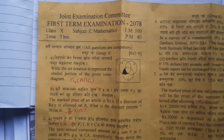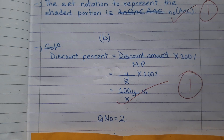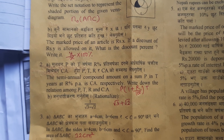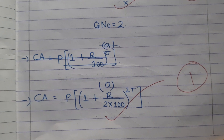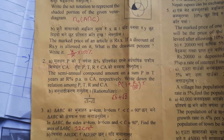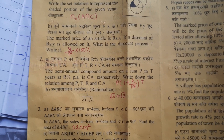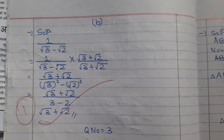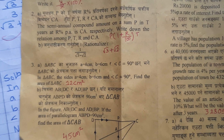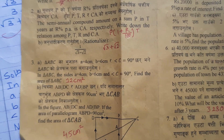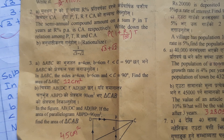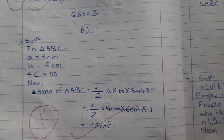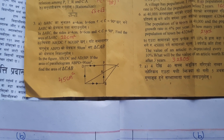Question number one B answer is. Question number two A answer is. Question number two B answer is. Question number three A answer is. Three B answer is.